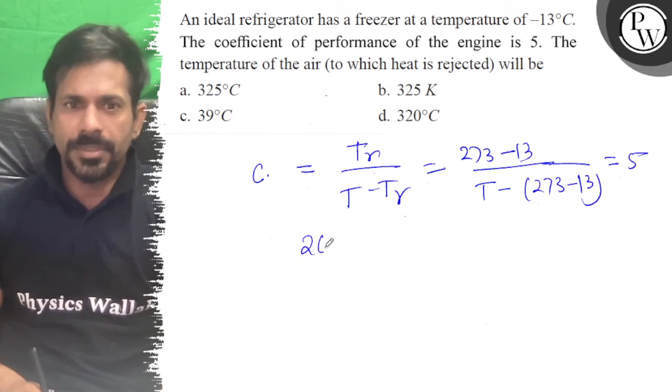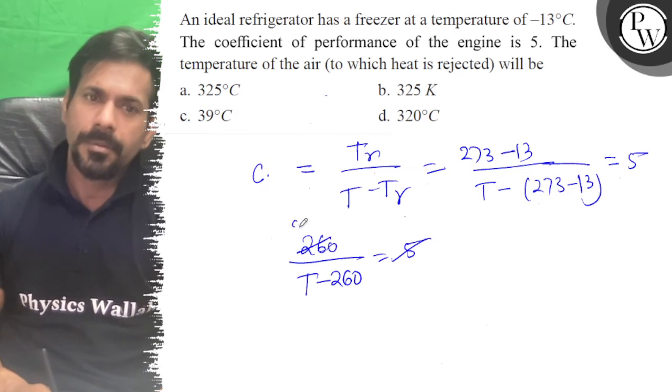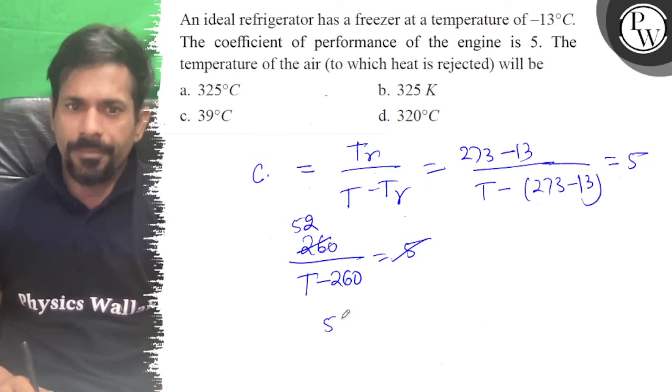So 260 upon T minus 260 is equal to 5. So you're going to get T minus 260 equals 52.